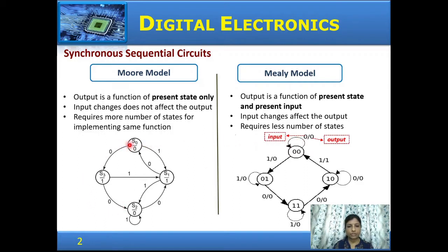The state diagrams of the two models are shown. In the Moore model, there are four states: S0, S1, S2, and S3. The output of each state is fixed — when in state S0, the output is 0; for S1, the output is 1; S2 is 0 and S3 is 1. When in state S0 with an input of 0, the circuit moves to S3; with an input of 1, it moves to S1.